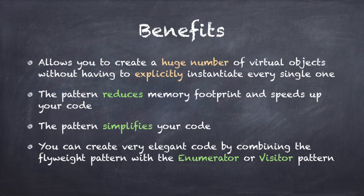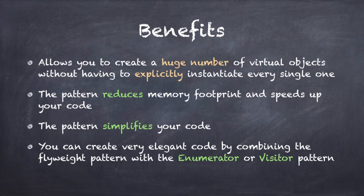This will reduce the number of times that the object constructor needs to be called. Finally, the pattern simplifies your code. Traversing a data structure where some nodes are instantiated and others are not is a complex operation, but the flyweight pattern hides this fact from the client. So the client code can enumerate a large data structure of virtual objects without having to worry which ones are instantiated and which ones are not. You can create very elegant code by combining the flyweight pattern with the enumerator or visitor pattern, which lets you efficiently enumerate a very large data structure.